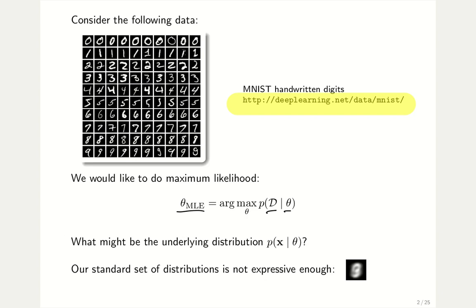So we need a model. We need to ask ourselves what the underlying distribution of an image given some parameters might be. And now we run into a problem. We have a bunch of distributions at hand, but our standard set of distributions is not expressive enough. What I've depicted down here is the mean of the entire dataset. So that's kind of an assumption of a Gaussian distribution on the entire dataset. It looks like you combined all these images, and it's one big blur, and you can't see anything. That already tells you that our standard set of distributions, in particular the Gaussian distribution, is not expressive enough.